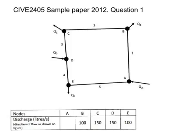Looking at the whole network, we see that the total flows in are at D and A, and that needs to equal the total flow out at B, C, and D, which is 350. As D is equal to 150 in, A must equal 200. So let's put 200 going in at A.